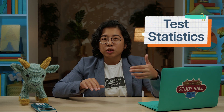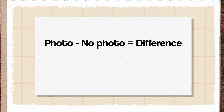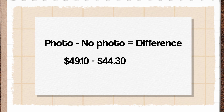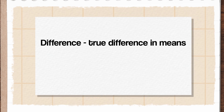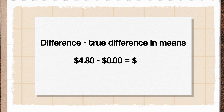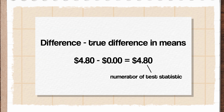We move on to test statistics, which help us measure how far sample results are from expected results. We've observed a sample mean of $49.10 for the 36 games with a photo in the ad, and $44.30 for the 36 games without a photo, for a difference of $4.80. From that number, we subtract the true difference in means assuming the null hypothesis is true. Our null hypothesis is that there is no difference, so we'd just be subtracting zero — meaning that $4.80 is just the numerator of our test statistic.